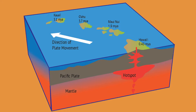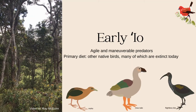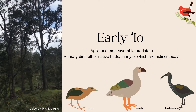The ancestors of EO arrived while the island chain was forming. EO evolved to be agile and maneuverable predators. Early EO would have eaten other native birds as its primary diet. Many of these birds are extinct today, and that includes the moho, moanalo, and flightless ibis that are illustrated at the bottom of this slide.